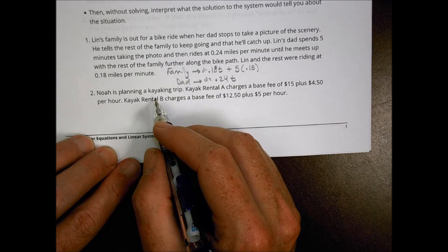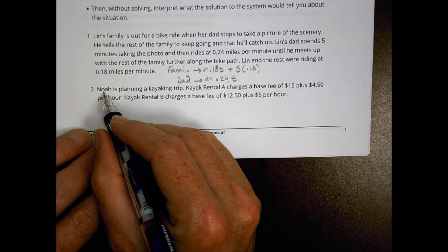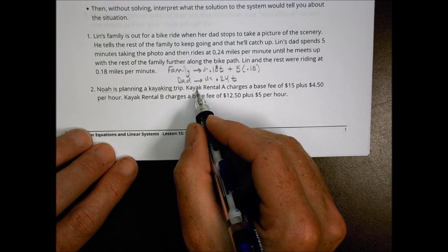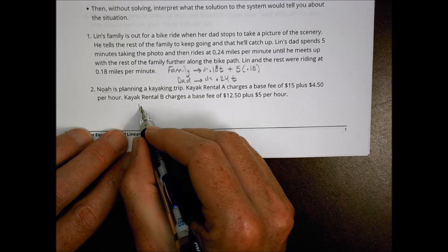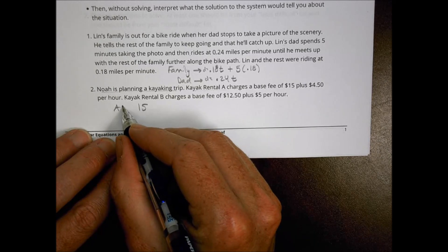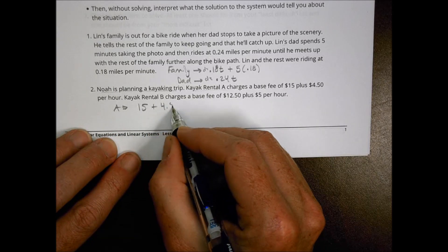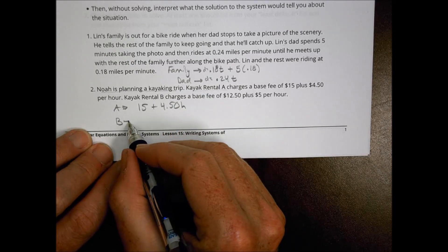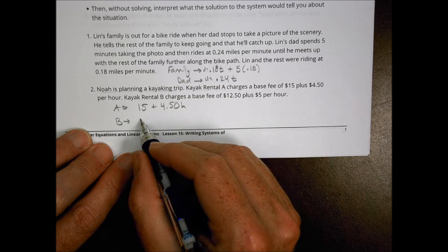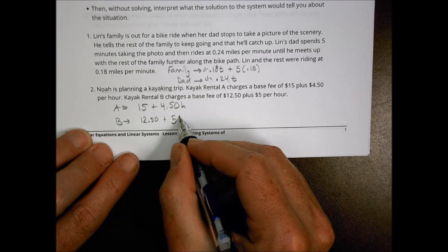Look at number two though, I think you'll find it a little easier to understand. It says Noah's planning to take a kayaking trip. Kayak rental A charges a base fee of $15 plus $4.50 every hour. Kayak company B charges a base fee of $12.50 plus $5 every hour.